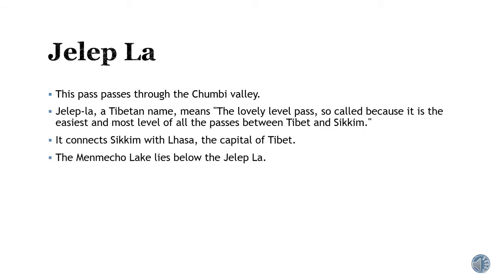Jalaplah Pass passes through the Chumbi Valley. It is a Tibetan name which actually means 'the lovely level pass.' It is so called because it is the most level of all the passes between Tibetan Sikkim. It connects with Lhasa, the capital of Tibet. The main Mecho Lake lies below the Jalaplah.